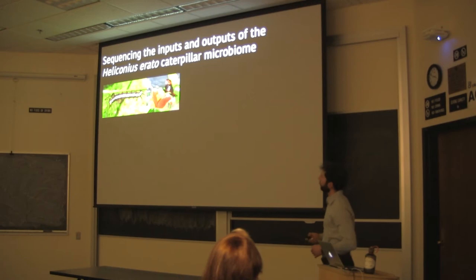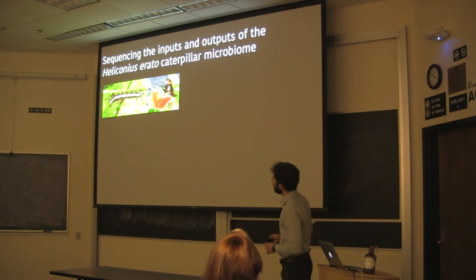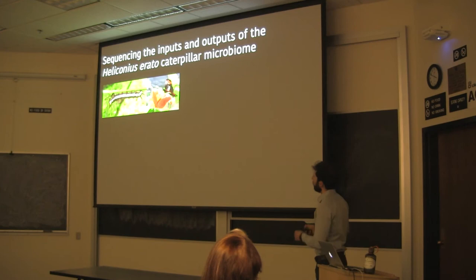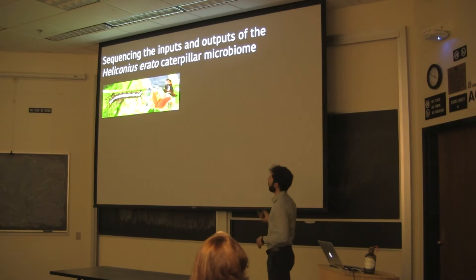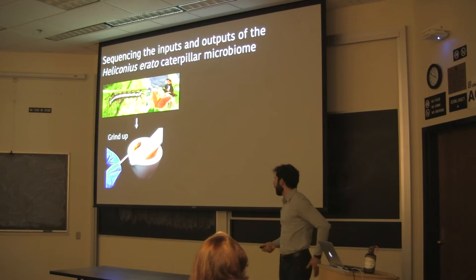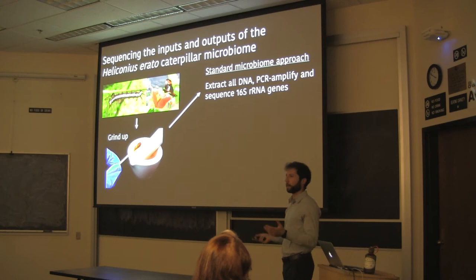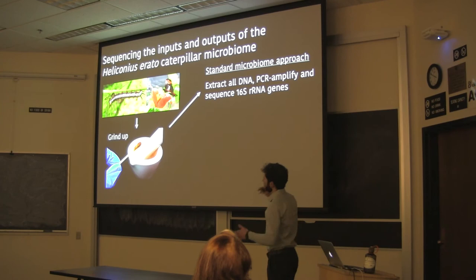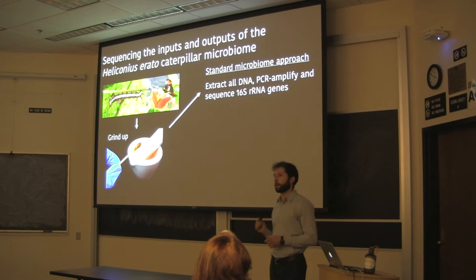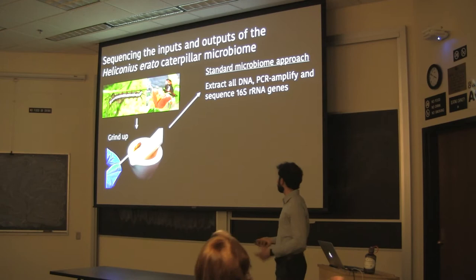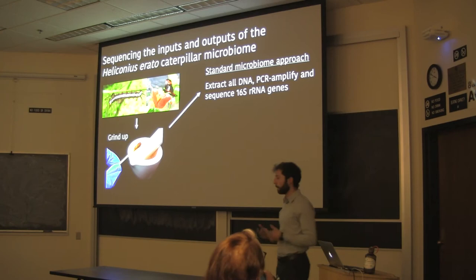Where I actually started was asking how microbes assist caterpillars with herbivory — digestion, detoxification, and whether they acquire their microbes from leaves as Portier proposed. This first project was focused on one species of butterfly, Heliconius, in Panama. I used microbial sequencing methods to characterize the inputs and outputs of the caterpillar microbiome. I collected and raised a bunch of insects, ground them up with a mortar and pestle, and ran that material through the standard microbiome pipeline — extracting DNA, PCR-amplifying the 16S ribosomal RNA gene, and sequencing those barcodes.